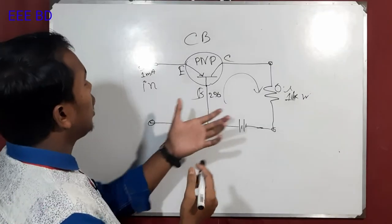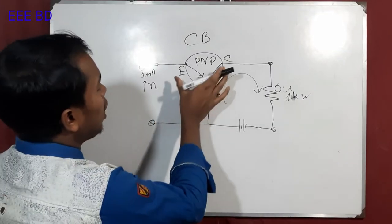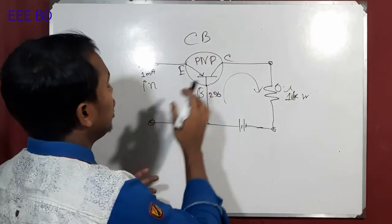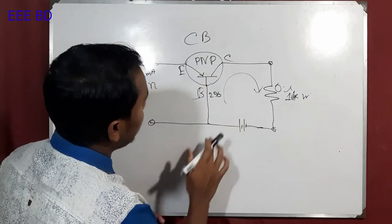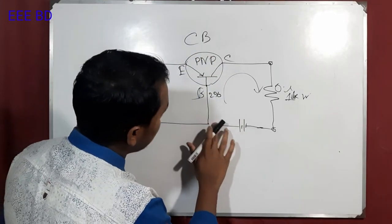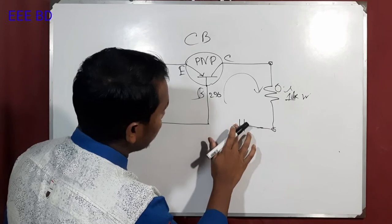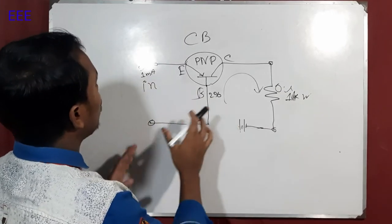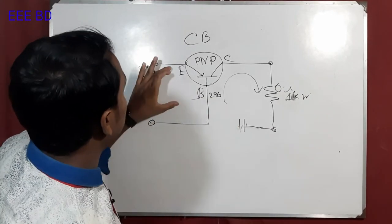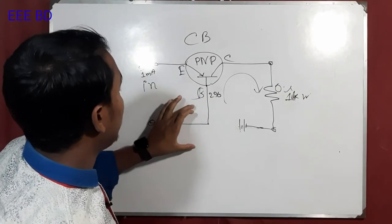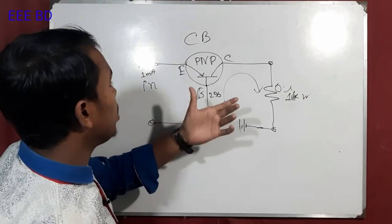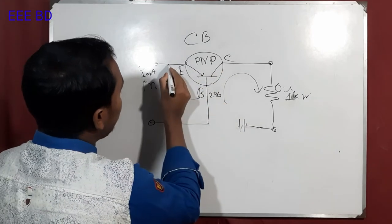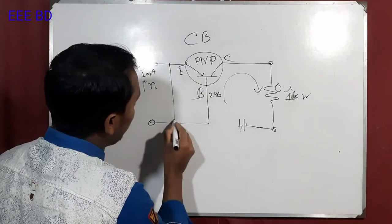So we will do the Common Emitter Configuration. We can start the base connection. Input is the emitter and output is the collector emitter.